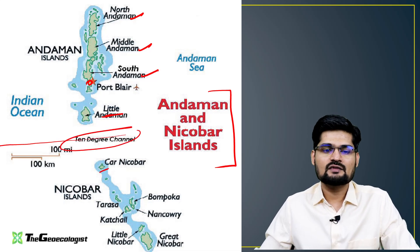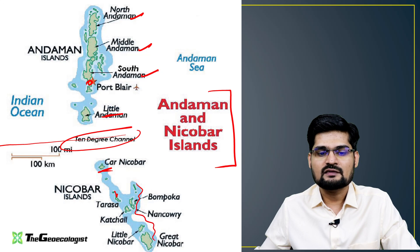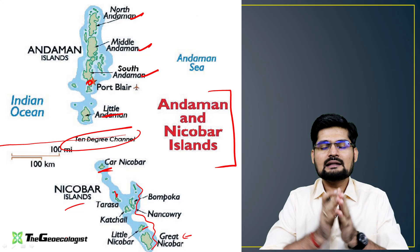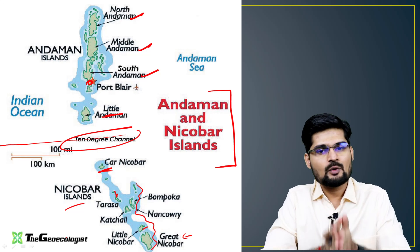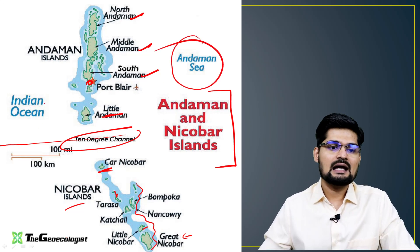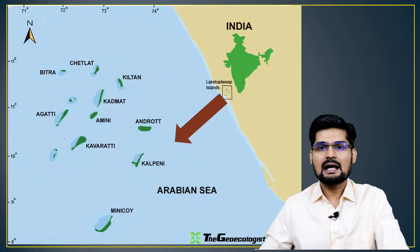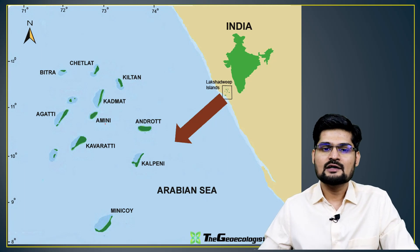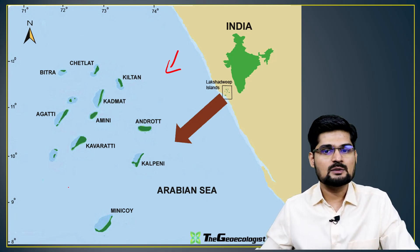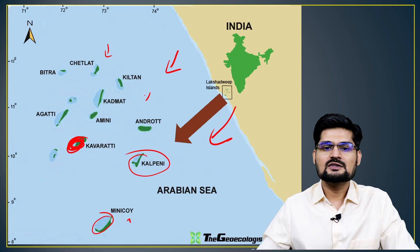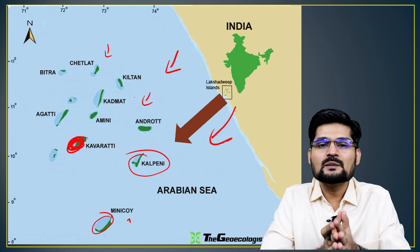The Nicobar Islands include Car Nicobar and extend to Great Nicobar and Little Nicobar. The southernmost point of India is called Indira Point. The Andaman Sea is part of the Bay of Bengal. The Lakshadweep Islands, another set of coral reef islands, include Minicoy, Kalpeni, and Kavaratti (the capital), and are famous for tourism.